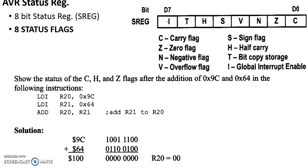The I-bit is cleared once a hardware interrupt occurs. Once an interrupt occurs, this will be set to zero, and upon serving this interrupt using an interrupt service subroutine, there will be an instruction at the end asking the controller to return to the interrupt system — that is Return Interrupt, RETI. Once this software instruction RETI is executed, the flag will be set to one again.